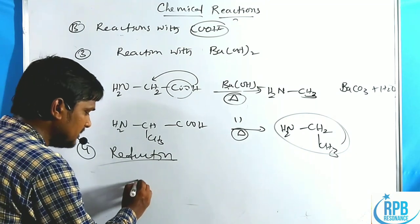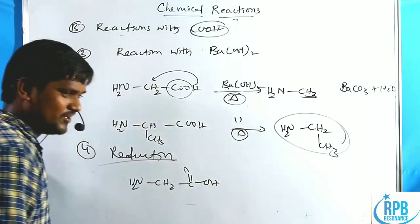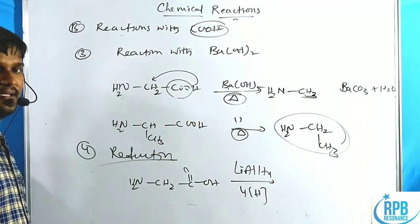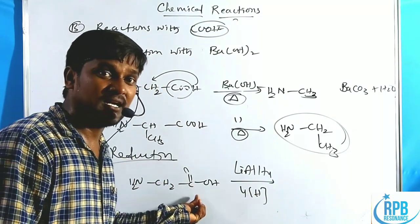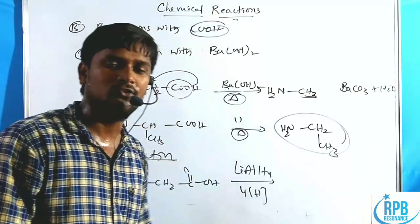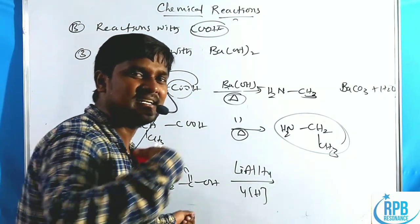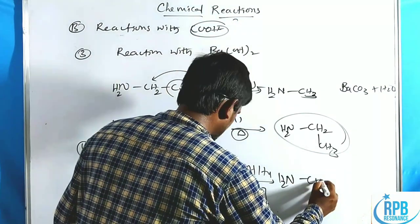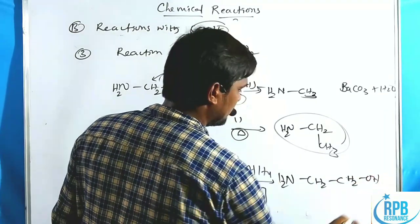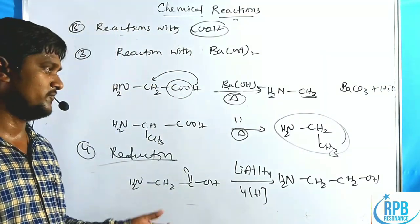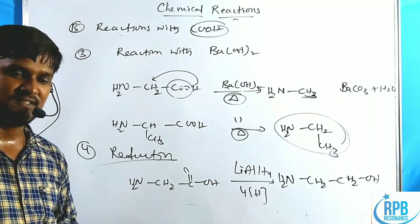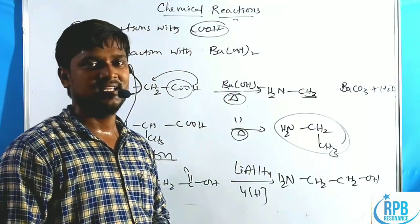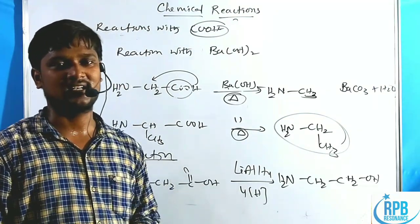The final reaction with COOH functionality is reduction. NH2-CH2-COOH treated with lithium aluminum hydride (LiAlH4) — the most widely used reducing agent — which produces four moles of hydride. COOH is first reduced to CHO (aldehyde), then further reduced to CH2OH. The reaction cannot stop at the aldehyde stage. The product is NH2-CH2-CH2OH, which is 2-aminoethanol. That concludes reactions with NH2 and COOH functionality.